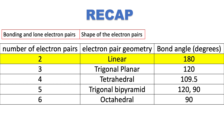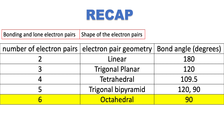For two electron pairs, the electron pair geometry is linear, with a bond angle of 180 degrees. For three electron pairs, the electron pair geometry is trigonal planar, with bond angles of 120 degrees. For four electron pairs, the electron pair geometry is tetrahedral, with bond angles of 109.5 degrees. For five electron pairs, the electron pair geometry is trigonal bipyramidal, with bond angles of 120 degrees around the middle plane and 90 degrees from the top and bottom atoms to the middle plane. And finally, for six electron pairs, the electron pair geometry is octahedral, with bond angles of 90 degrees.